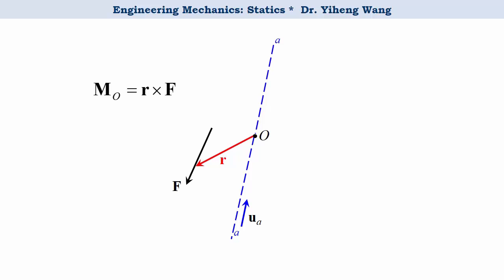We can determine the moment caused by the force about point O, MO, using the vector equation MO equals R cross F. However, the direction of this moment is not necessarily along the A A axis as we want it. In fact, we can determine the direction of this moment must be perpendicular to the plane formed by both vector F and vector R.